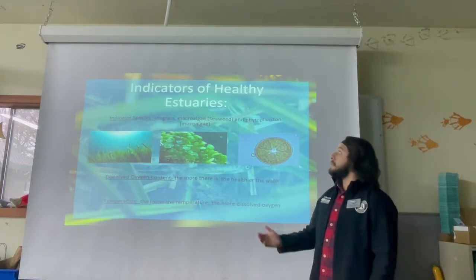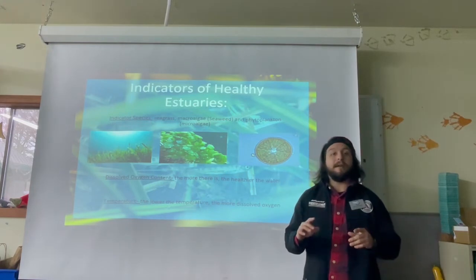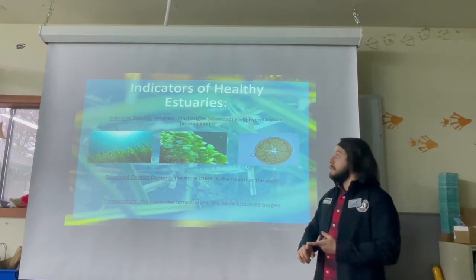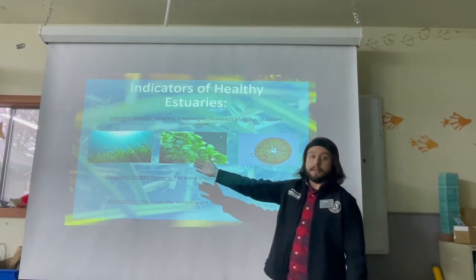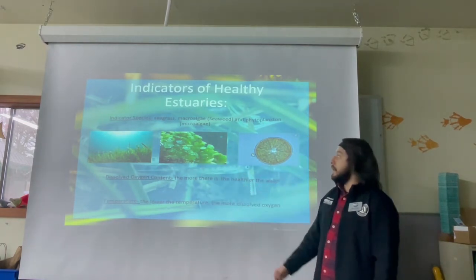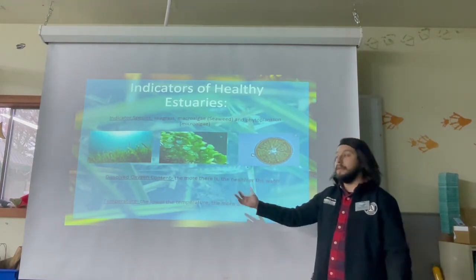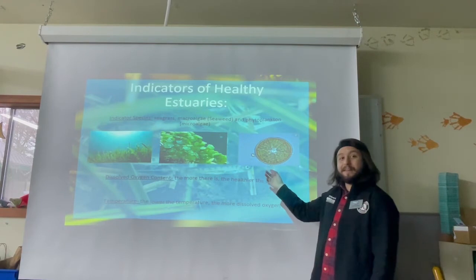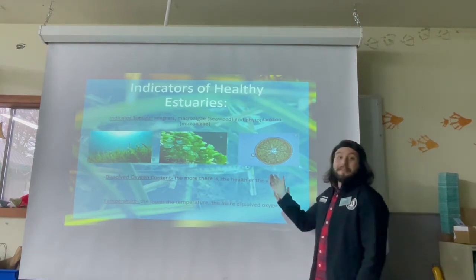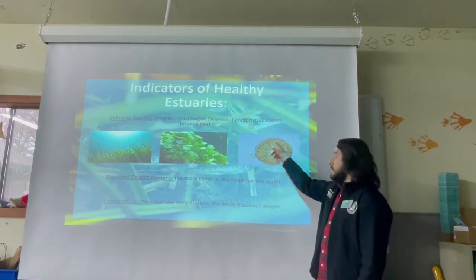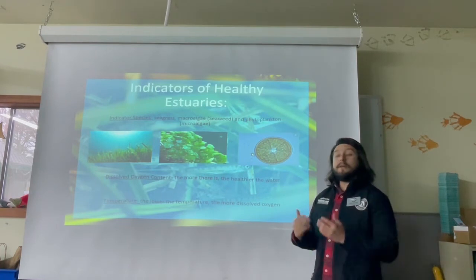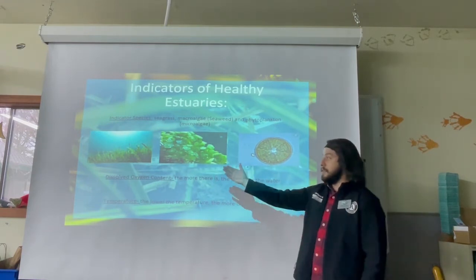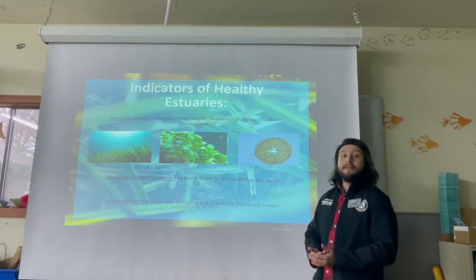Moving on to indicators of a healthy estuary. Remember, estuaries have brackish water — a fresh and saltwater system — so we'll see a mixture of different plants and algae. Indicator species in estuaries include seagrass, which you can see waving in the estuary; macroalgae, another way of saying seaweed; and phytoplankton, a type of microalgae that is extremely small — you really need a microscope to see it. Their main role is to provide dissolved oxygen content for the estuary and help maintain lower temperatures. If you see any of these, it's a good indicator the estuary is healthy.